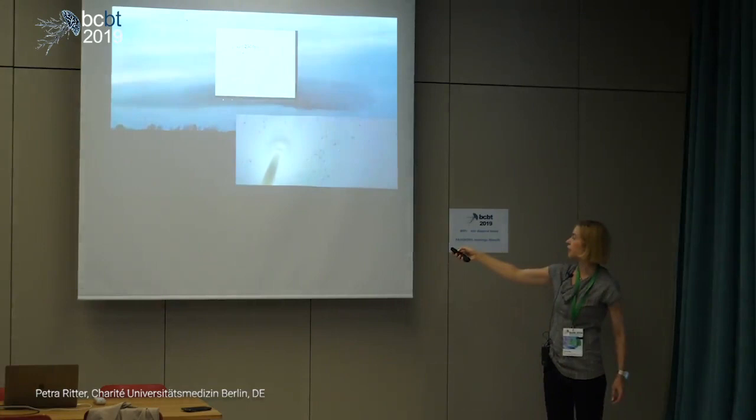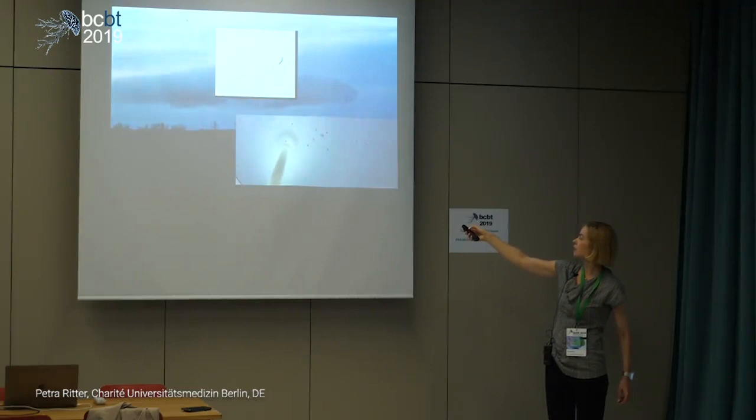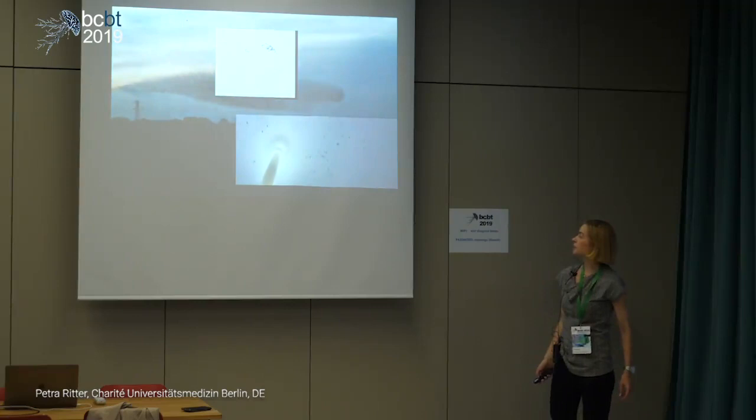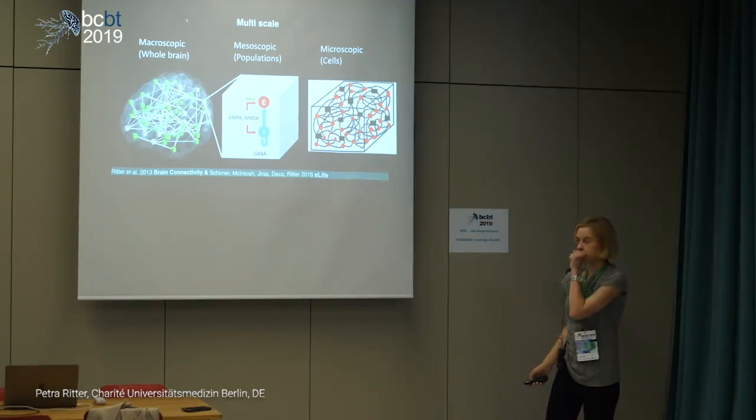Here we see neurons in the phase space, which is spanned by the membrane potential and the opening probability of the ion channels, and you see that these neurons are also synchronizing. There is a mean field approximation of this neuronal population — a little red cross — that we use in the virtual brain in order to describe the population dynamics. It's a reduced description of what really happens in the brain.